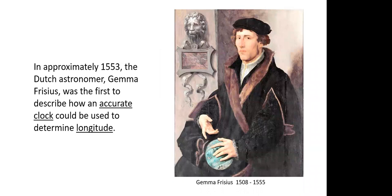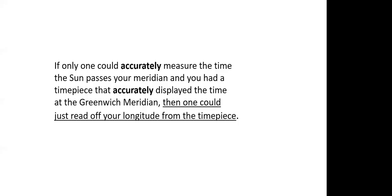Many years before that, the Dutch astronomer Gemma Frisius was the first to describe how an accurate clock could be used to determine longitude. He said: if only one could accurately measure the time the sun passes your meridian, and you had a timepiece that accurately displayed the time at the Greenwich meridian, then one could just read off your longitude from the timepiece — as simple as that.